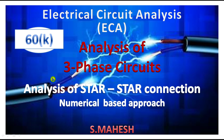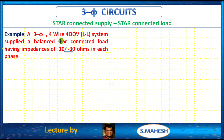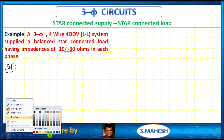Hello everyone. We have to discuss the analysis of a star-star connection — meaning a star connected supply system and a star connected load system. I am considering a numerical problem: a three-phase four-wire 400 volts line-to-line system supplied a balanced star connected load having impedance of 10 at an angle minus 30 ohms in each phase.